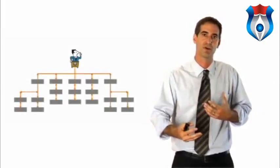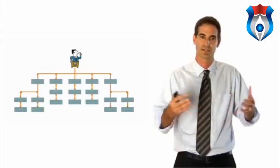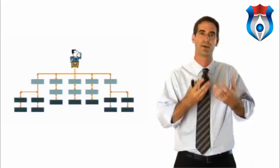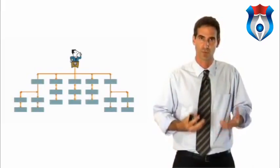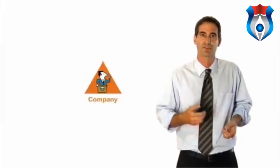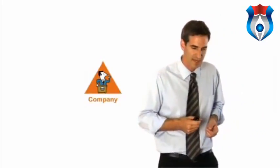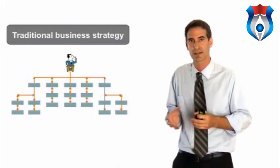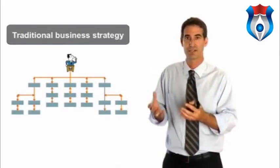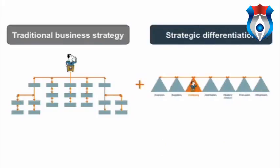Traditional strategy is generally developed in a hierarchical way — corporate management sets the process in motion, business units look at their markets, investment priorities feed back up, and corporate strategy rolls back out through the organization. Strategic differentiation is different: it needs to be built across a value chain, where the company is only one stakeholder. It has to be thought of and implemented that way. We're not talking about changing organizational structure — we're talking about adding strategic differentiation built systematically across a value chain.